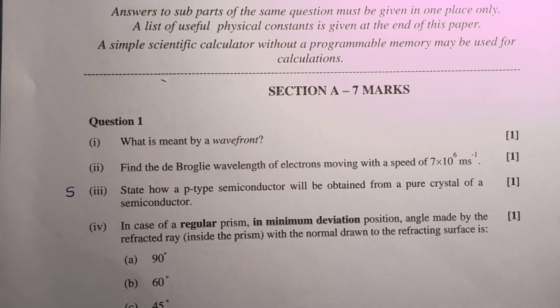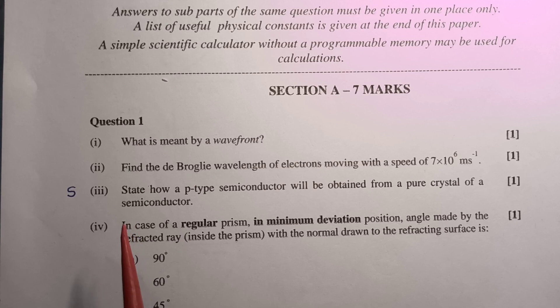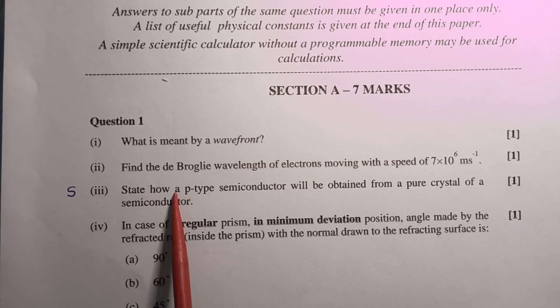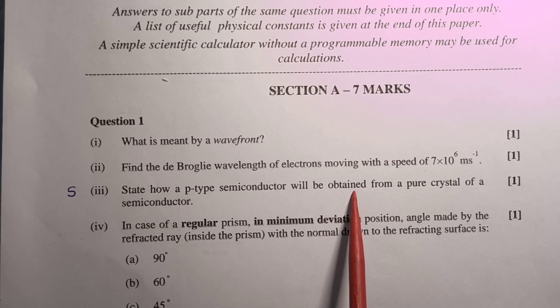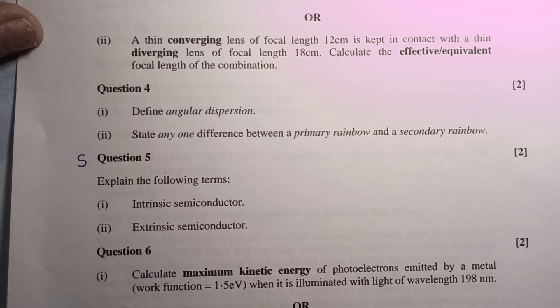Children, in sample question paper of semester 2 exam, six marks questions are being asked from the topic semiconductor. The first question is: state how a p-type semiconductor will be obtained from pure crystal of a semiconductor. This is a one mark question. Then a two marks question is: explain the following terms - intrinsic semiconductor and extrinsic semiconductor.